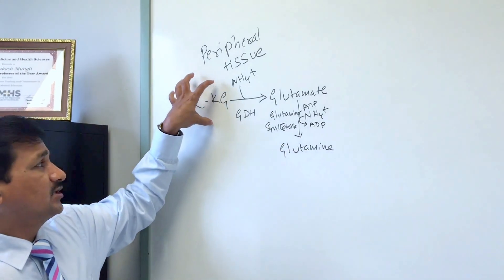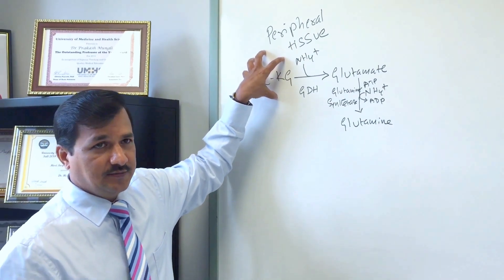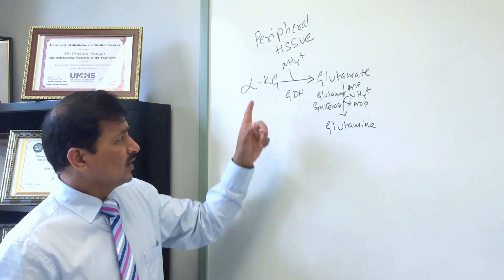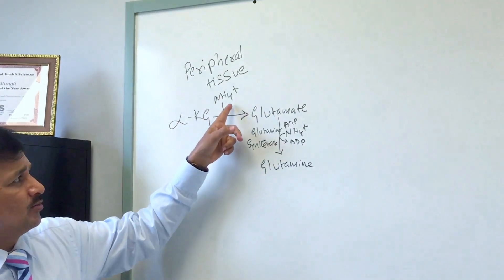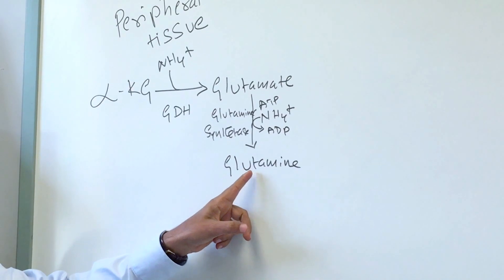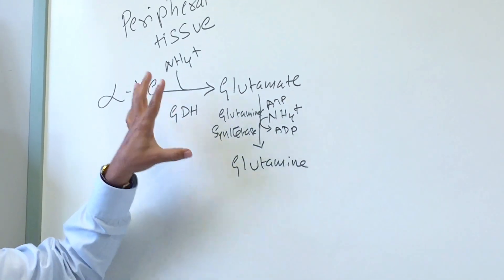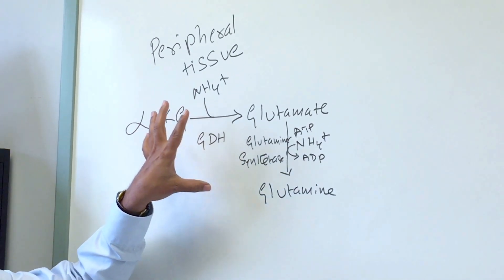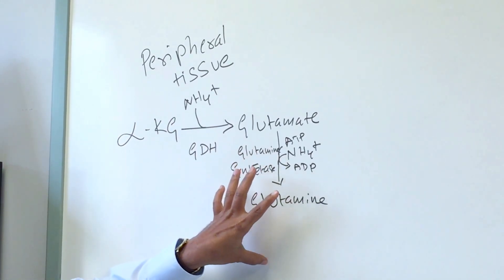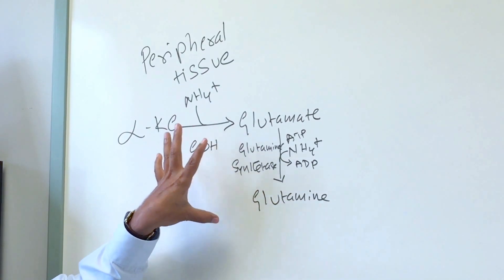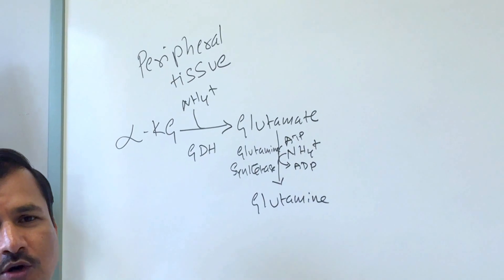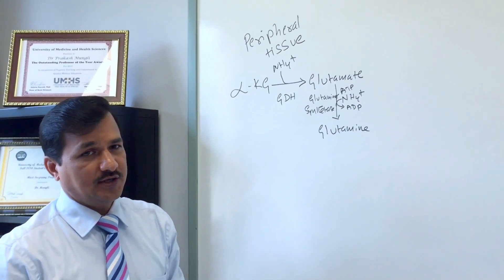The carbon skeleton of alpha-ketoglutarate is able to accept two ammonium ions: alpha-ketoglutarate takes one ammonium ion to become glutamate, and glutamate takes one more ammonium ion to become glutamine. So the carbon skeleton of alpha-ketoglutarate can fix two ammonium ions. This is what happens in peripheral tissues to handle ammonium ion production.